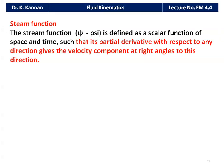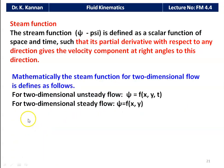Like the velocity potential function, the next function is stream function, denoted by psi. Stream function psi is defined as a scalar function of space and time such that its partial derivative with respect to any direction gives the velocity component at right angles to that direction. For two-dimensional unsteady flow, psi is a function of x, y, and t. For two-dimensional steady flow, psi is a function of x and y only.